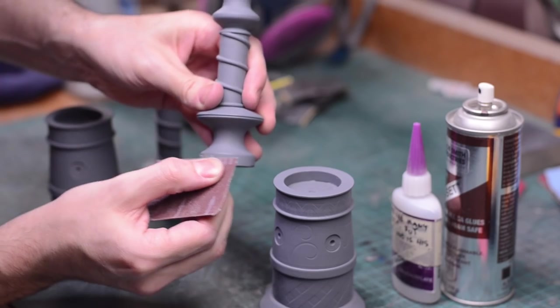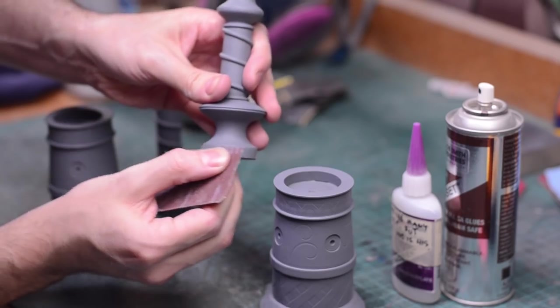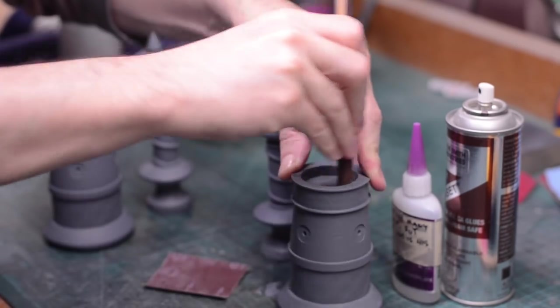When you do want to attach those parts, be sure to sand away any areas that have paint on them that need to touch your glue. This will give the glue a little something to grip onto.